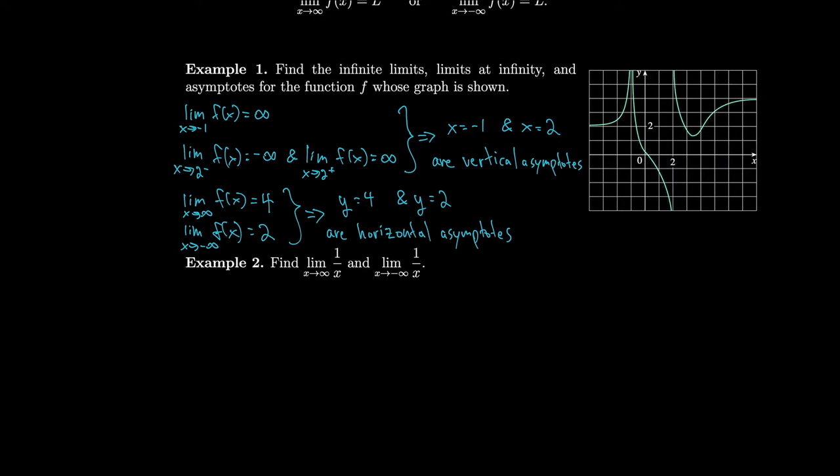Let's find the limit of 1/x as x approaches infinity and as x approaches minus infinity. If we plug in big numbers — say 100, we get 0.01; 10,000 gives 0.0001 — the bigger the denominator, the smaller 1/x becomes. So as we plug in bigger and bigger numbers, we get smaller and smaller values. The limit as x goes to infinity of 1/x equals 0.